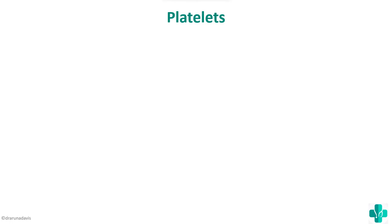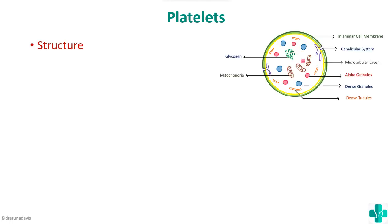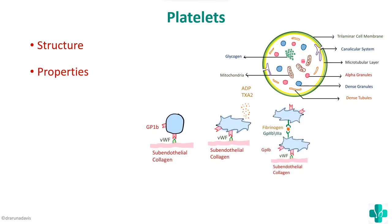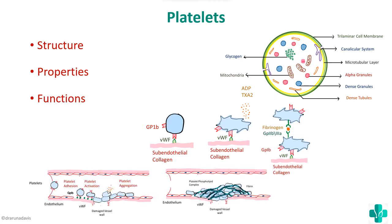In summary, today in this video we have seen the structure with its diagram, the important properties of platelets — platelet adhesion, platelet activation, and platelet aggregation — and the functions including the role in temporary and definitive hemostasis. We also covered some applied aspects. I hope this concept is clear. Thank you.